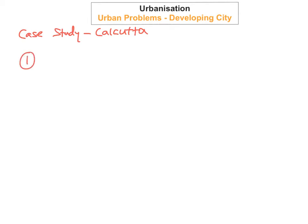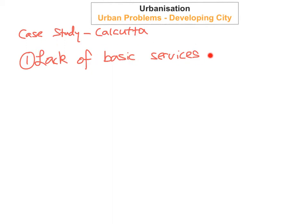The first problem is the lack of basic services in Calcutta. They lack sewerage facilities, lack of running clean water, medical facilities, educational facilities, housing facilities, infrastructure, roads, and sanitation. All around, basic needs are lacking in Calcutta. That's one of the major problems.